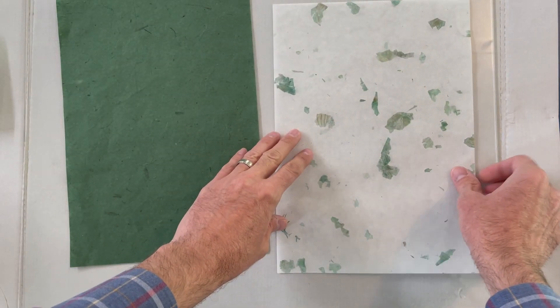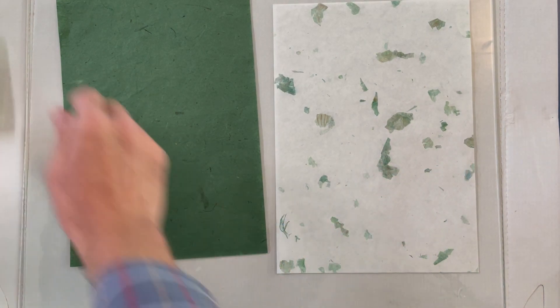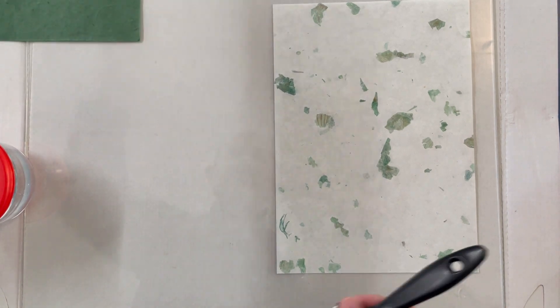I'm going to laminate two sheets of the mulberry paper together to make a green and white duo sheet. I lay the first sheet down.